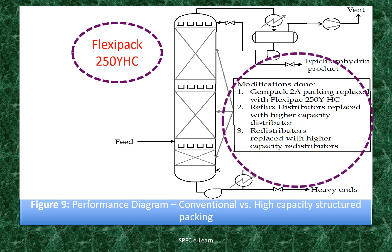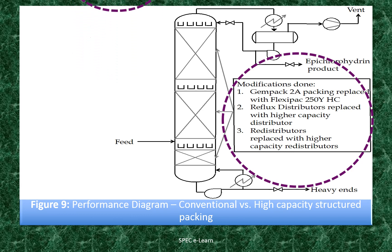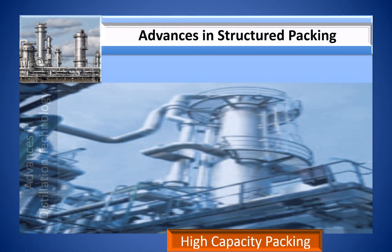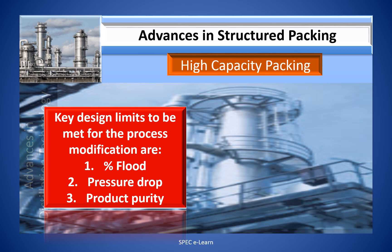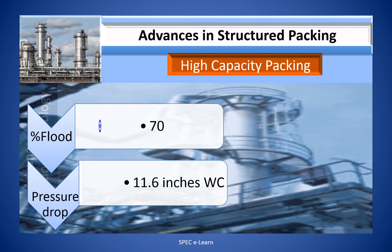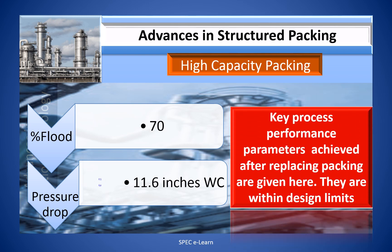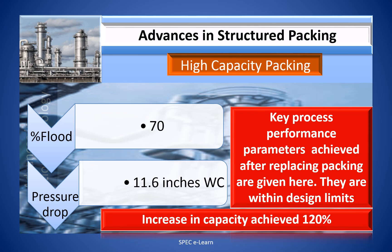This slide illustrates what modifications were done in the distillation column during replacement of standard packing with high-capacity packing. Note that packing replacement also requires changes in other column internals such as distributors, redistributors, vapor distributors, and packing support. In any process modification, the design objective is not to exceed process constraints — percentage flood, pressure drop across rectification and stripping sections, and finished product purity. In this example, the maximum percentage flood limit was 70%, the achieved flooding level was 70%, and the pressure drop limit of 12 inches of water column per foot of packing was also achieved within limits.